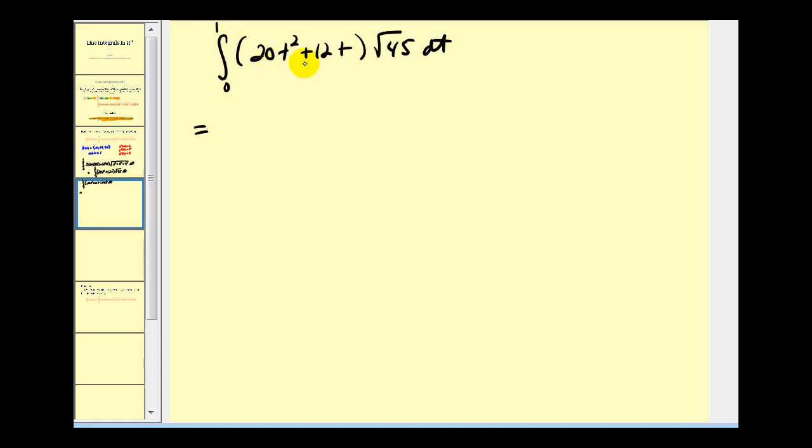Here we have a common factor of four. Let's factor out four square root forty-five. We'll be left with 5t squared plus 3t. The square root of forty-five simplifies to three square root five. So we have twelve square root five.